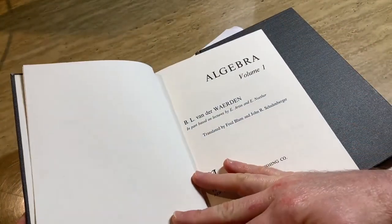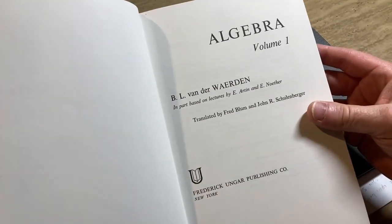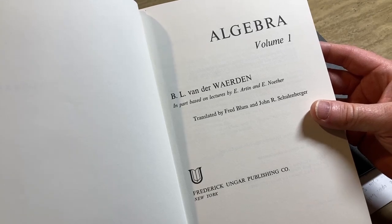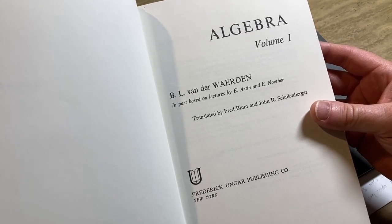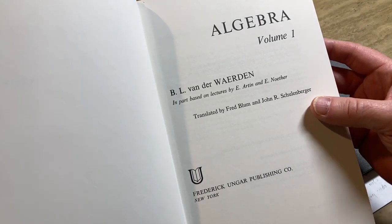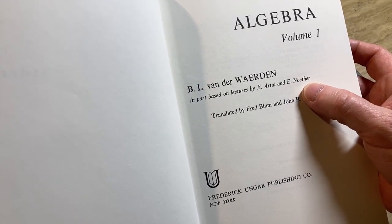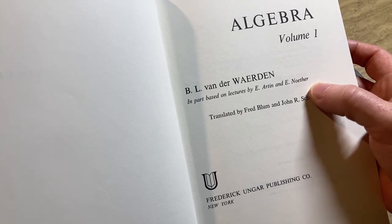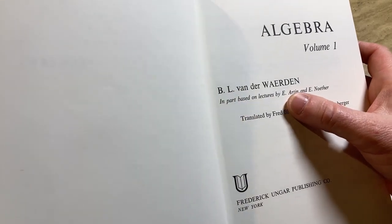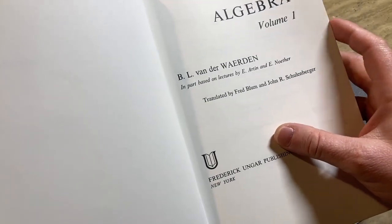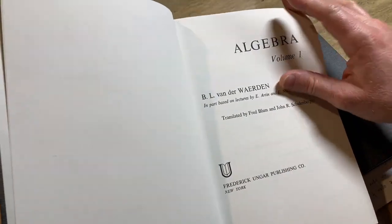Algebra, volume one, B.L. van der Waarden, in part based on lectures by E. Artin and E. Noether. So that would be Emmy Noether, who is known for Noetherian rings. They are named after her, and this would be Emil Artin. So his son is Michael Artin, who was also a mathematician.